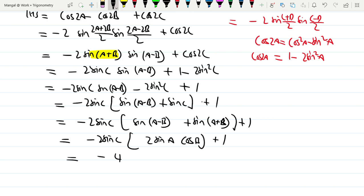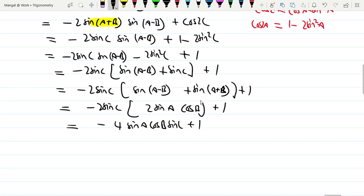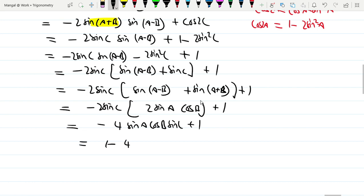Therefore, -2sin(c) × 2sin(a)cos(b) + 1, which equals -4sin(a)cos(b)sin(c) + 1, or 1 - 4sin(a)cos(b)sin(c), which equals the right-hand side.